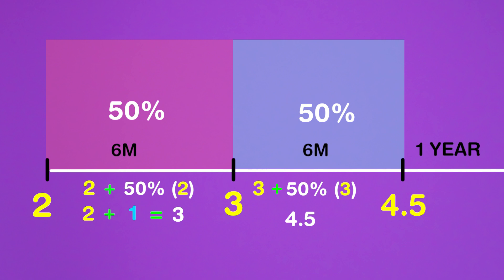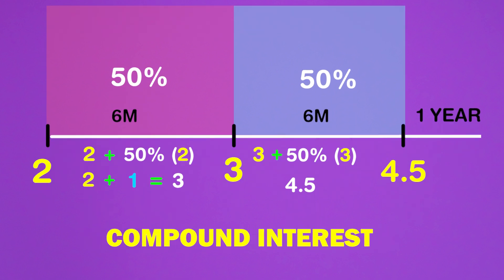This time, we will also earn 50% return on the $1 interest we earned in the first period. Thus, we earn interest on the original $2 we had at the very beginning, as well as on the interest accumulated in the first period. This is called compound interest.